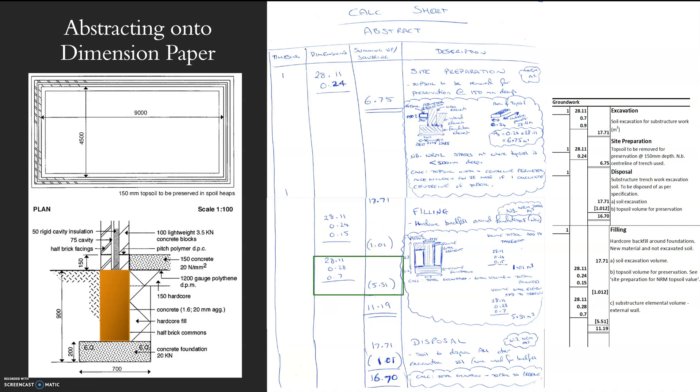And then again, this section here, the wall volume, that's going to basically be filled with wall, that soil needs to be taken away again. So I've worked that out, 28.11 times my depth, which is 0.28, and then my depth is 0.7.